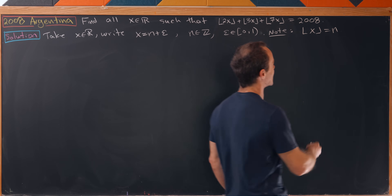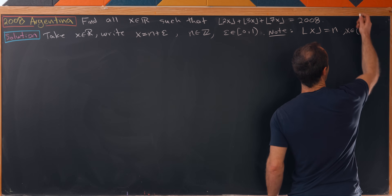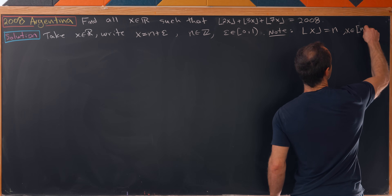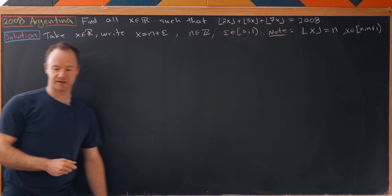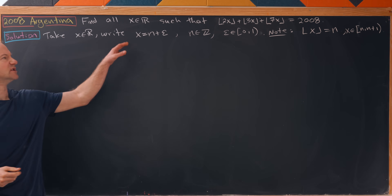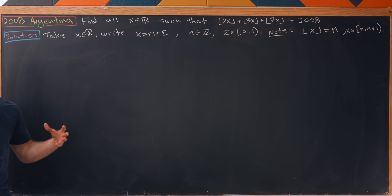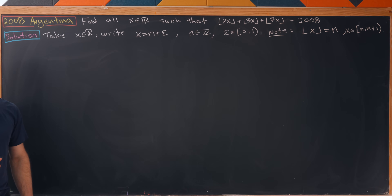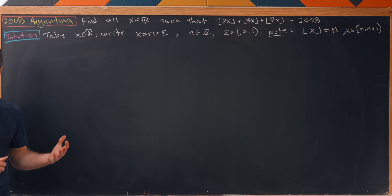Also, x itself comes from the half-open interval from n to n plus 1, including n but not n plus 1. We could approach this systematically by looking at cases, but I'd like to lay it out more visually, so let's get a big number line on the board.